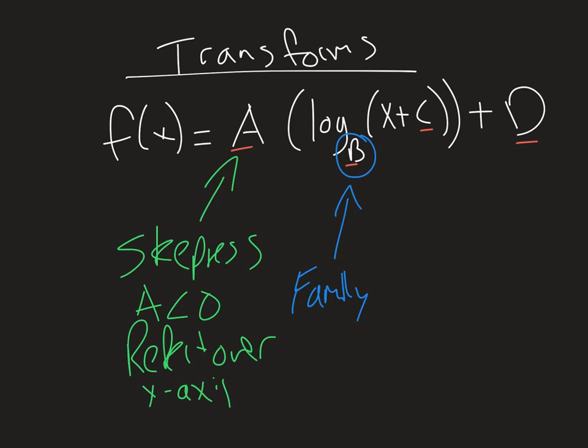If we look at c, this is our horizontal shift. This one behaves counter-intuitively to what you would think. Negative is going to move it right and positive is going to move it left.